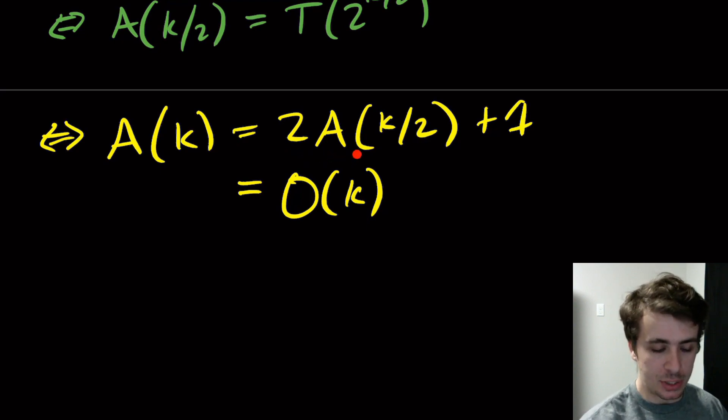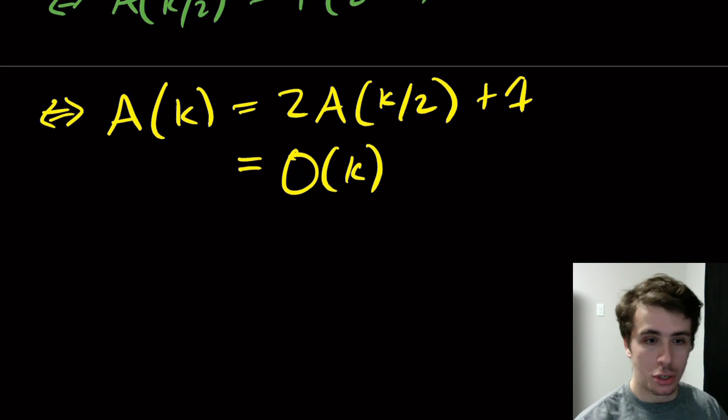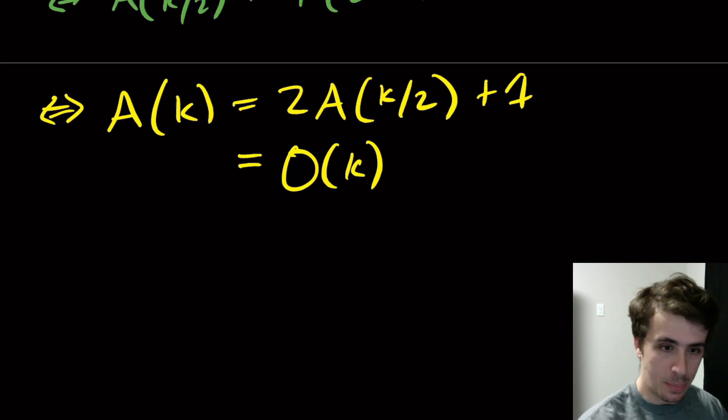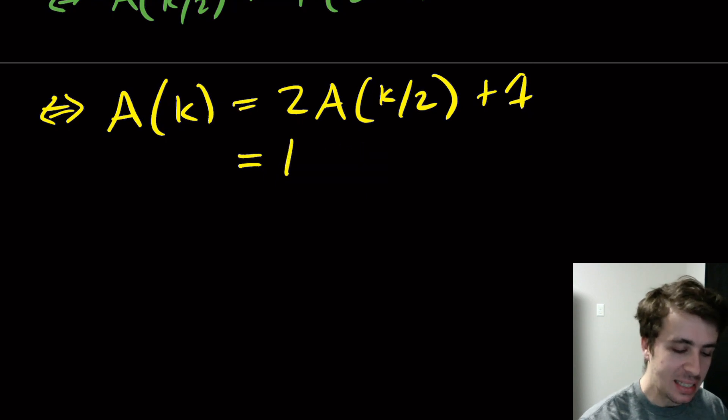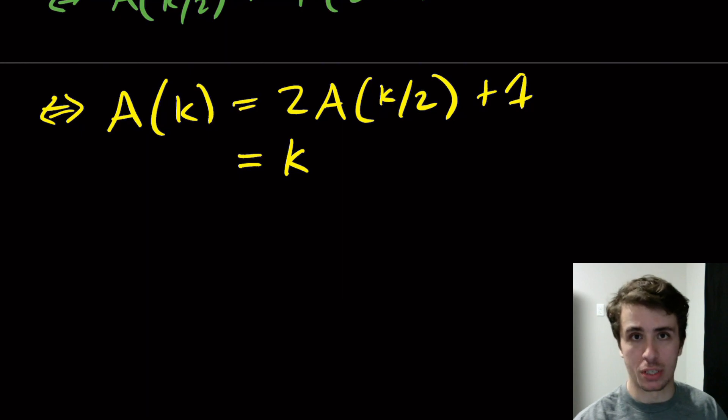Let's actually plug this back in. What we can actually get even more precise is that it's not just big O(k), it's exactly equal to k, assuming that the bottom of the recursion is a constant which is 1.